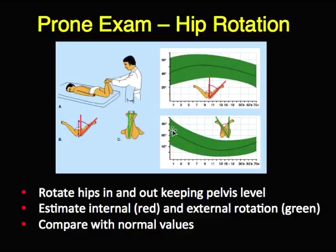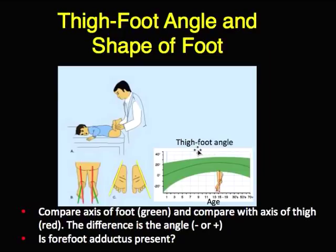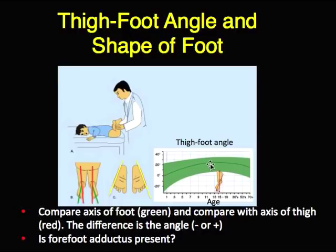External rotation of the hip is greatest in the newborn and tends to rapidly decline, explaining why infantile outtowing resolves spontaneously. We next look at the thigh foot angle with the knee flexed at 90 degrees — comparing the axis of the thigh in red and the axis of the foot in green. Just let the leg hang, and when the child is relaxed, use that as the measure. The thigh foot angle turns in a little more in early infancy and gradually gets better, explaining why internal tibial torsion resolves with time. We also look for adduction of the forefoot.